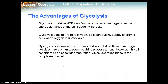The advantages of glycolysis: it produces ATP very fast, which is an advantage when the energy demands of a cell suddenly increase. Glycolysis does not require oxygen, so it can quickly supply energy to cells when oxygen is unavailable — making it an anaerobic process. It does not directly require oxygen, nor rely on an oxygen-requiring process. However, it is still considered part of the cellular respiration process. Glycolysis takes place in the cytoplasm of a cell.